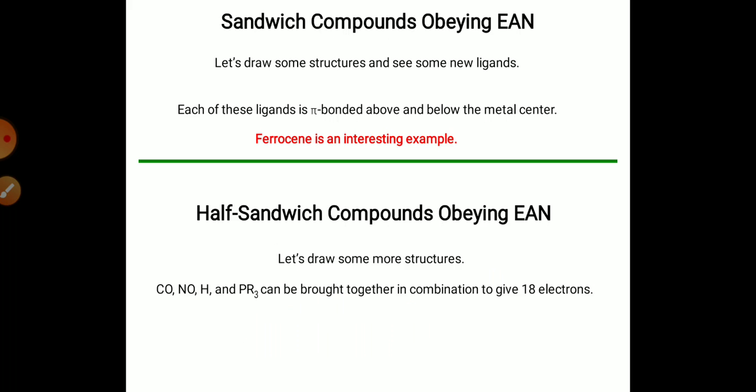The sandwich compounds obey the EAN rule. Each of these ligands is pi-bonded above and below the metal center. Ferrocene is a sandwich compound.